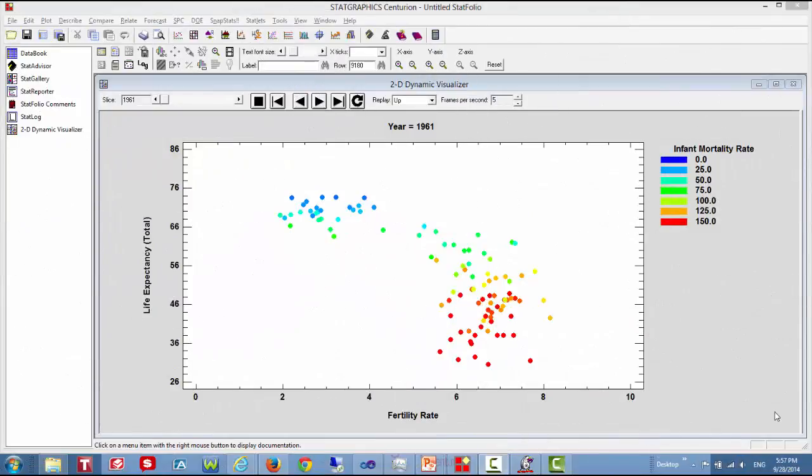Here's a quick illustration of how the dynamic visualizer statlets work. This is the 2D visualizer, showing some demographic data for all 188 countries in the World Bank's data set. On the y-axis, you see the life expectancy of a particular country. On the x-axis, you see the fertility rate, which is the average number of children that a woman has. The points are color-coded according to the infant mortality rate, and initially the data are displayed for 1961.